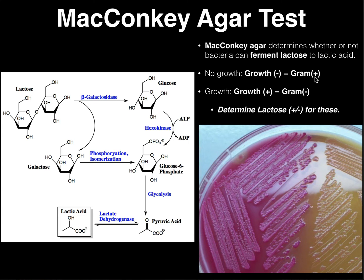There are two things you always report: the gram reaction and the lactose reaction. If it's gram-positive, you would say lactose unknown or lactose inconclusive — something that indicates you cannot tell the lactose reaction because there's no growth in the first place. Now the interesting part is when you do have growth. On the left side of the plate we have one kind of organism — lactose positive. On the right, lactose negative. And depending on whether it's lactose positive or negative, it actually changes the color. Growth indicates gram-negative because MacConkey agar selects only for gram-negative organisms and inhibits gram-positive.